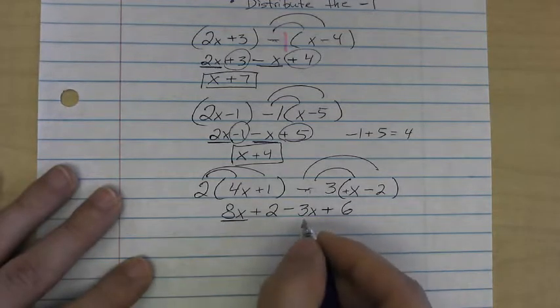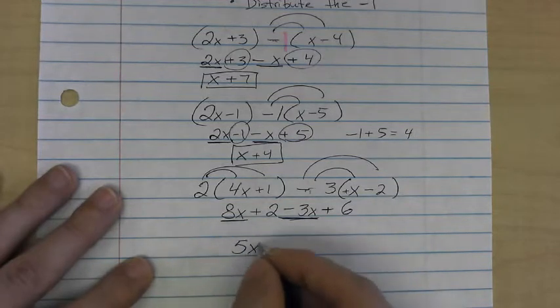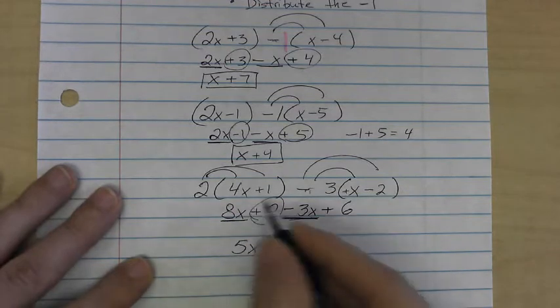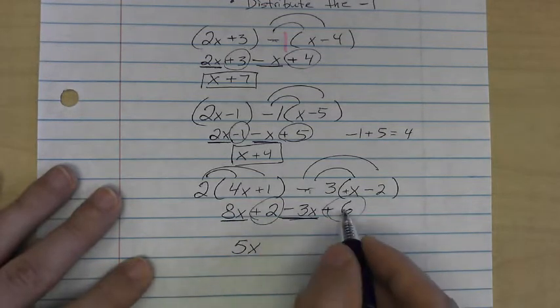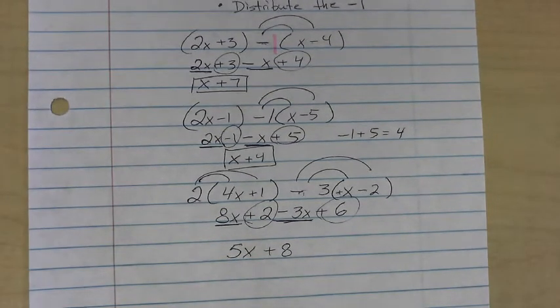To wrap this up, we've got 8x minus 3x's, and 8 minus 3 is 5, so 8x minus 3x is 5x. And right here, I have plus 2 and plus 6. 2 plus 6 is 8, so we have plus 8. And that is subtracting linear expressions.